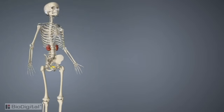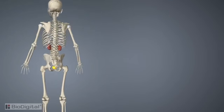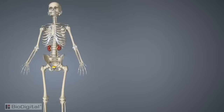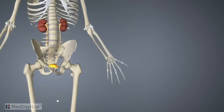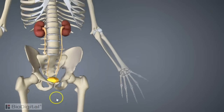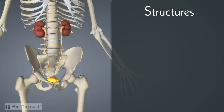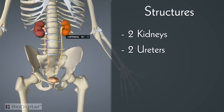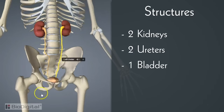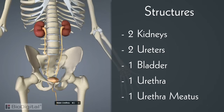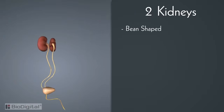The urinary system, much like the integumentary system, doesn't have many parts, but they are truly essential to the survival of the human organism. Let's take a look at the basic anatomical structures of the urinary system: two kidneys, two ureters, one bladder, one urethra, and the urethral meatus.